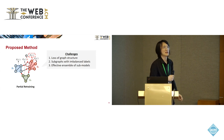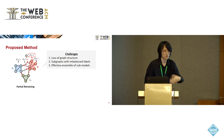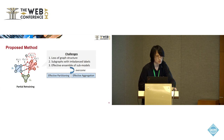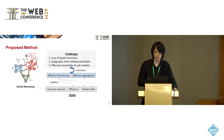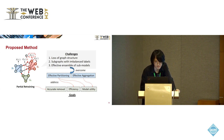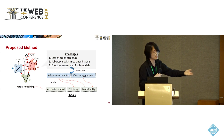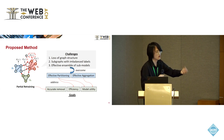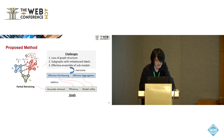To solve these challenges, we found two critical practices in partial retraining-based unlearning: partitioning and effective aggregation. We propose two innovative methods for both key steps. Our effective partitioning method is designed to address efficiency and model utility problems, while our effective sub-model aggregation approach can further enhance model utility. The accurate removal goal is naturally achieved by the partial retraining paradigm.